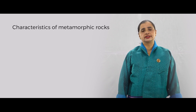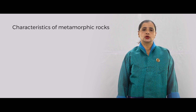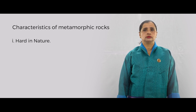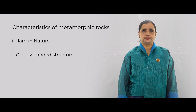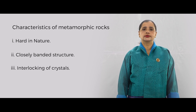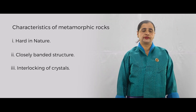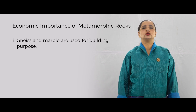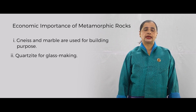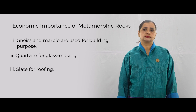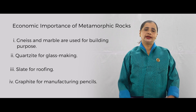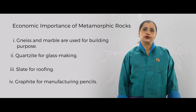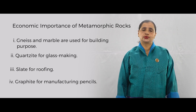Characteristics of metamorphic rocks: number one, metamorphic rocks are very, very hard in nature. Number two, they have a banded structure — a very tight, closed structure. Number three, they have interlocking crystals. Economic importance: gneiss and marble are used for building purposes; quartzites are used for making glass; slates are used for roofing; graphite is used for making pencils. Most metamorphic rocks are used for building purposes, which is why they have great economic importance.